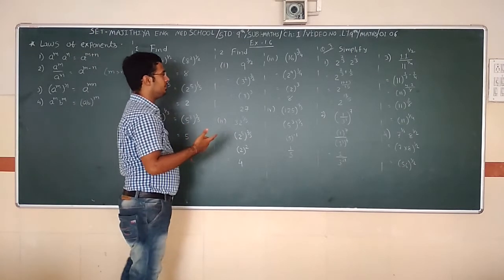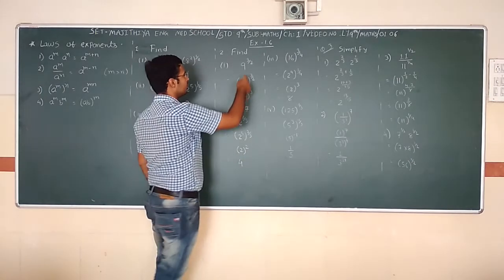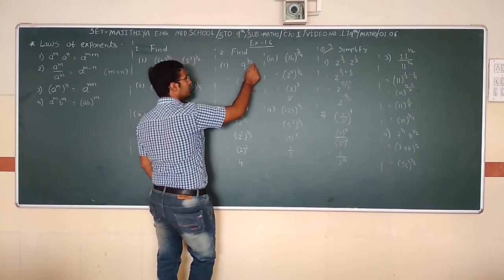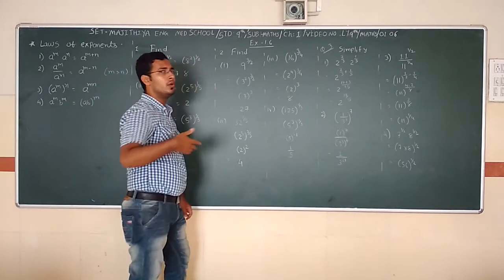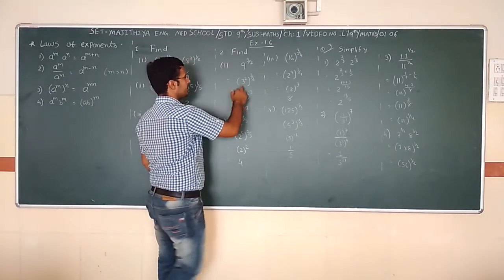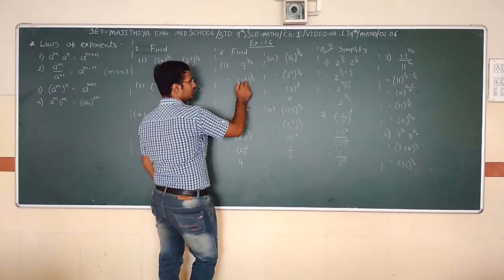Question number 2. There is 9^(3/2). We must remove the denominator. 9 is 3 squared, so (3²)^(3/2), the 2 cancels, giving 3³ = 27.